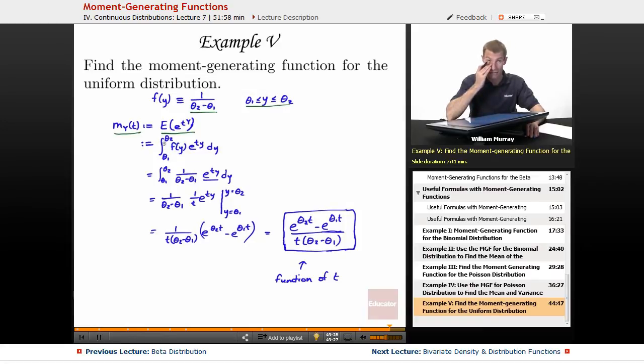The expected value of any function is the integral of the density function times that function. If this were discrete, we'd have a sigma sign, a summation, instead of an integral, and we'd have a probability function p instead of a density function f. But it's really the same idea. So, when you look at these formulas, if you kind of blur your eyes a little bit, you should see how they're really the same idea.